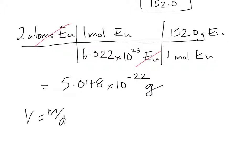So we know volume is mass over density. We've just solved for the mass. And we're told the density in the problem. And the density was 5.26 grams per cubic centimeter.